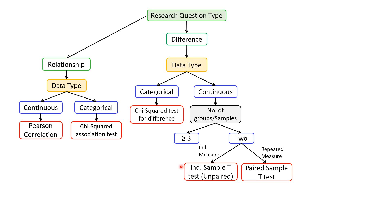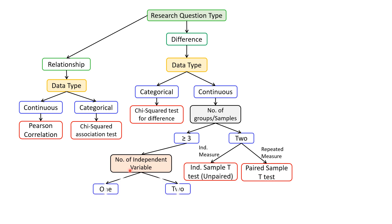If we have two independent groups with independent observations, we apply the unpaired or independent t-test. If the number of groups or samples is greater than or equal to 3, the next thing to consider is the number of independent variables. If we have one independent variable, we can apply one-way ANOVA.